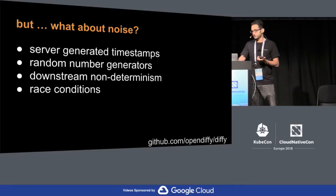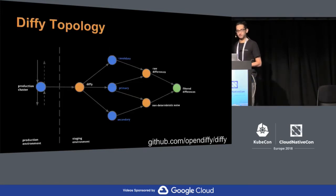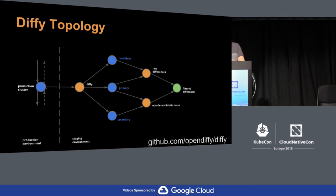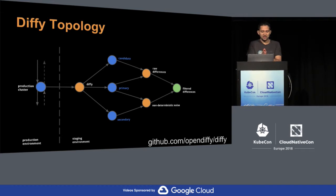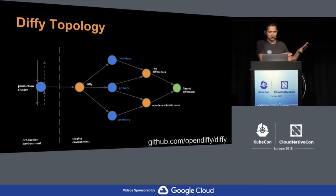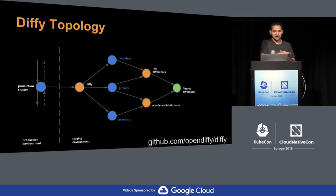Let's take a deeper dive into the Diffy topology. As we source traffic from our production cluster, the production cluster remains undisturbed — Diffy is not in the critical path. Diffy is in a separate staging environment, and we instrument the production cluster to sample some percentage of traffic. Diffy multicasts every single request it receives to three instances of your code.